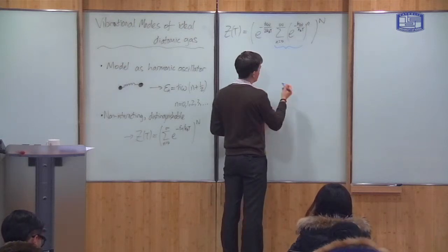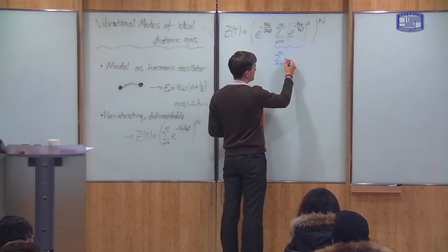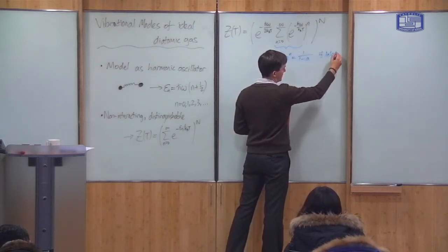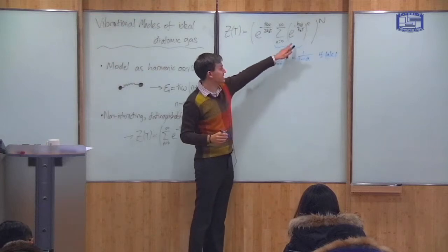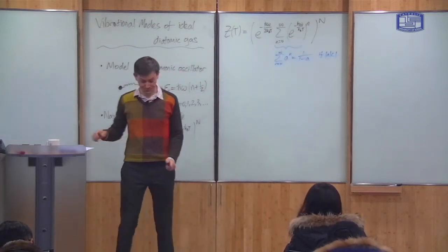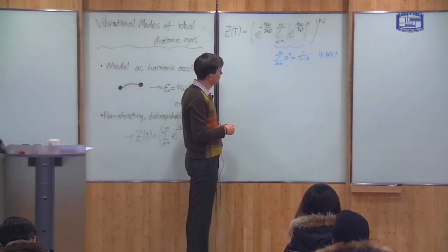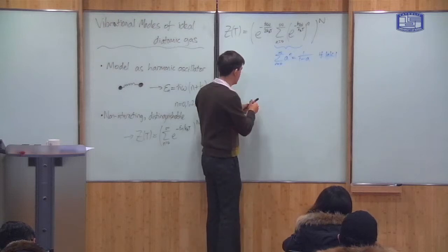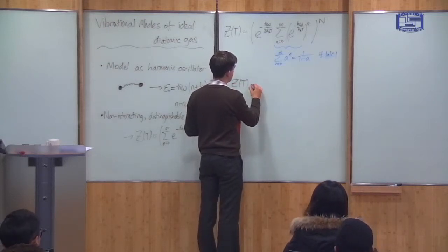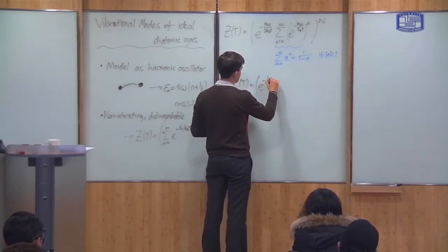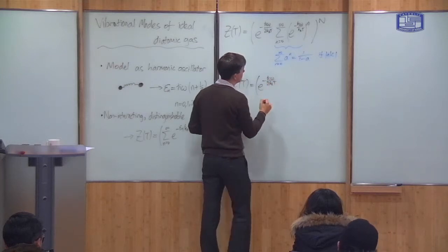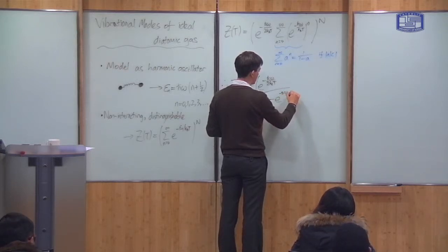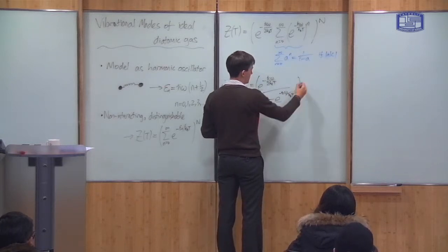So the result for sums like this I wrote down last week. The sum n goes from zero to infinity of some number to the power n is equal to one over one minus that number, provided that the size of that number is less than one, which in this case it is because it's a negative exponential. So this gives you the result that Z of T is e to the minus h-bar omega over 2k_B T divided by 1 minus e to the minus h-bar omega over k_B T, divided by N.